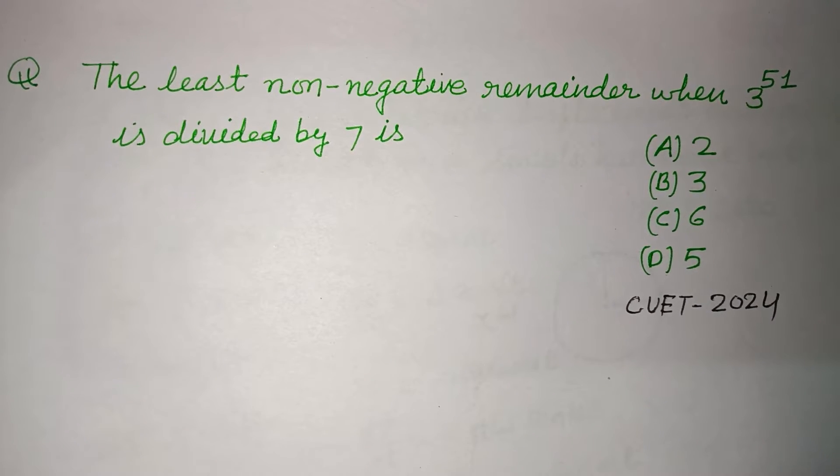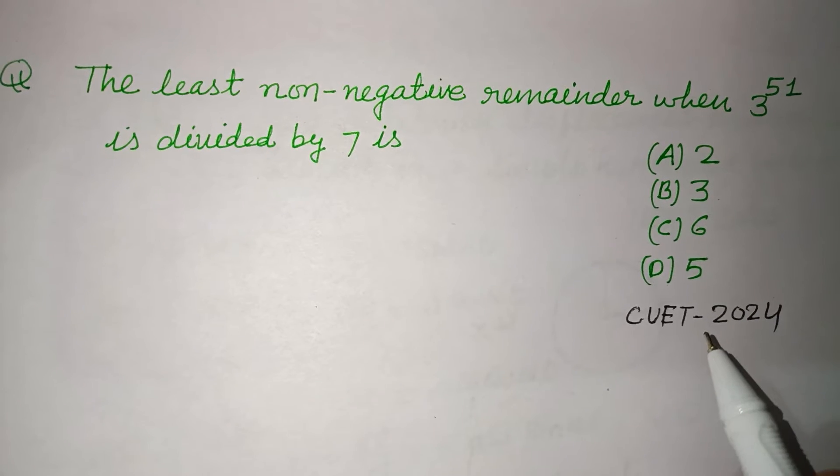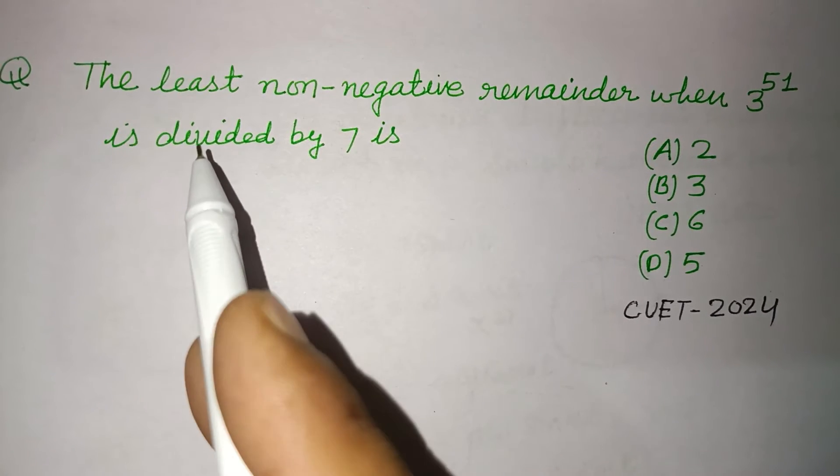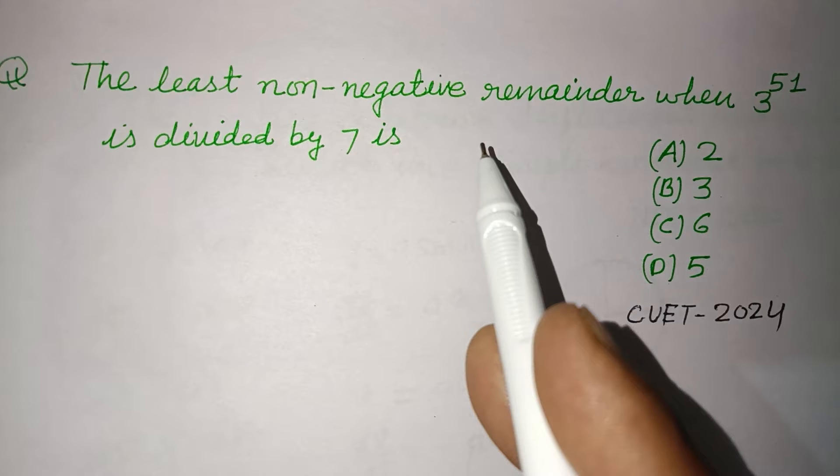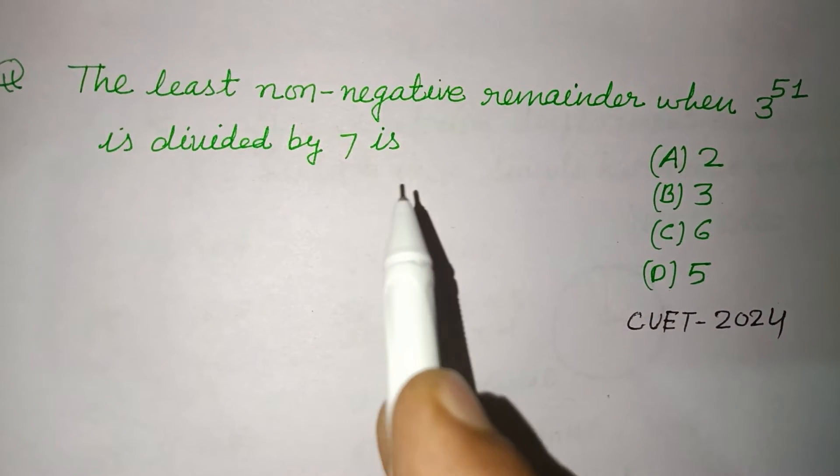Hello viewers, warm welcome to this YouTube channel. This is a question from CUET 2024. The least non-negative remainder when 3^51 is divided by 7 is.